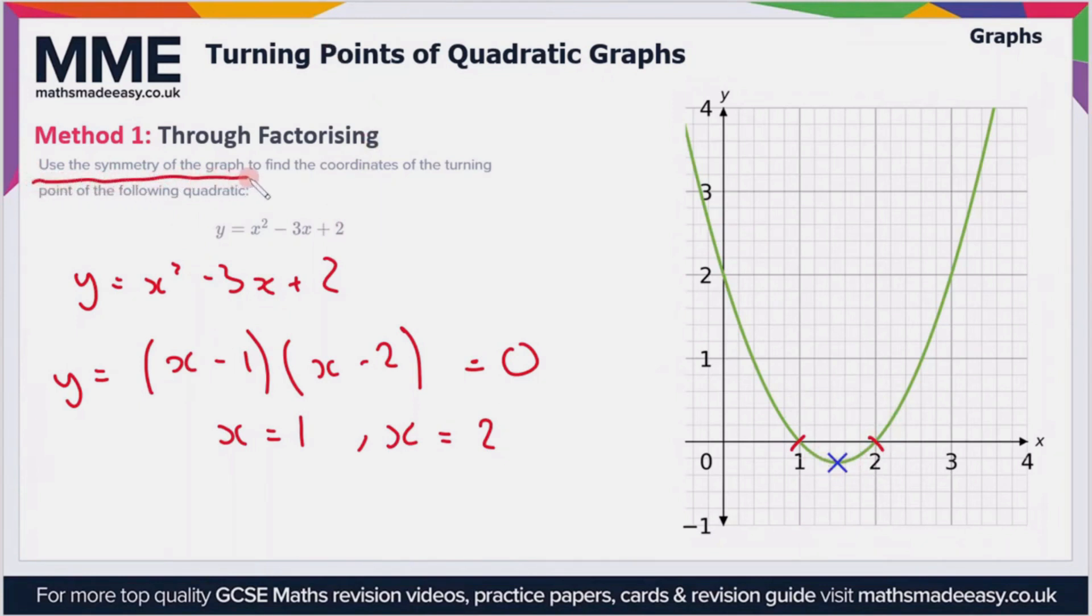Well, the turning point is going to come halfway between where the graph crosses the axes, so we can just take the average of these two x coordinates. So we can do 1 plus 2 divided by 2, which is 3 divided by 2 or 1.5.